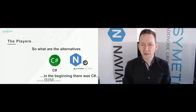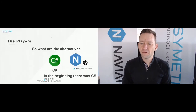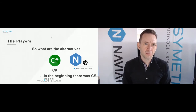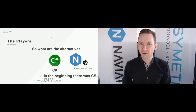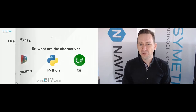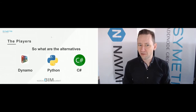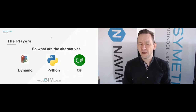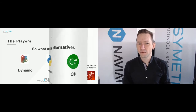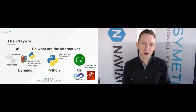So what are these players — which alternatives should you consider if you want to make your own applications for Revit to solve your workflows? Well, it used to be only C#, and C# is a pretty decent language. We made all of Naviate in C#. I've been making applications in C# for about 10 years. Most apps on the Autodesk App Store are probably made in C#, and there are rumors that Revit itself is even made in C#. But there are a few other alternatives now.